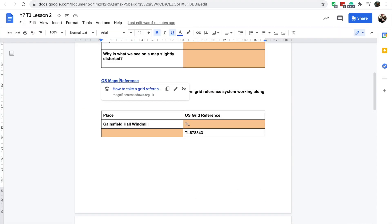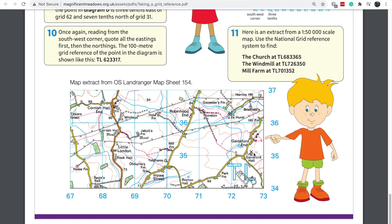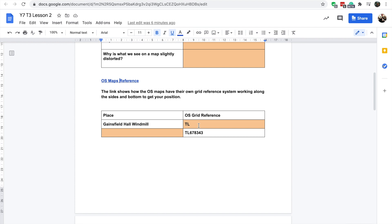So in your question, I've asked you to find Gainsfield Hall windmill. So if we flick back. So Gainsfield Hall windmill is this little symbol of windmill here. So along the bottom, up, and you should be able to get a number. And I want you to pop that in this box here, I've already given you the TL reference. On the second one, I've given you the reference, I want you to tell me what it is. So it's TL 678343.